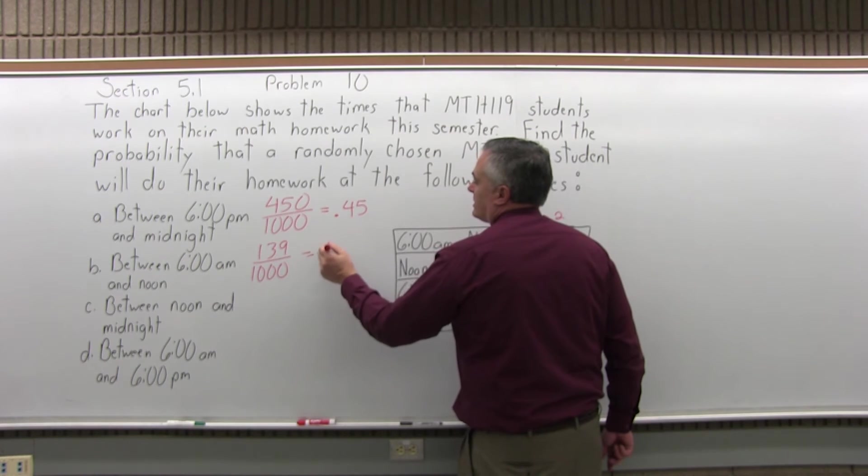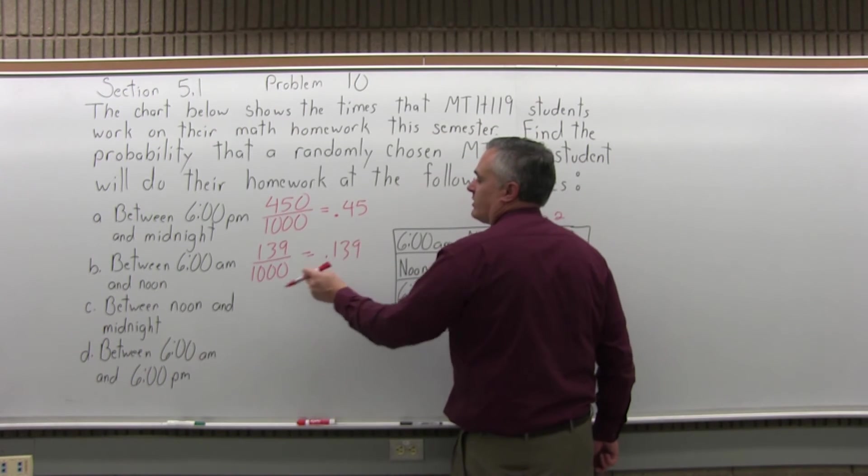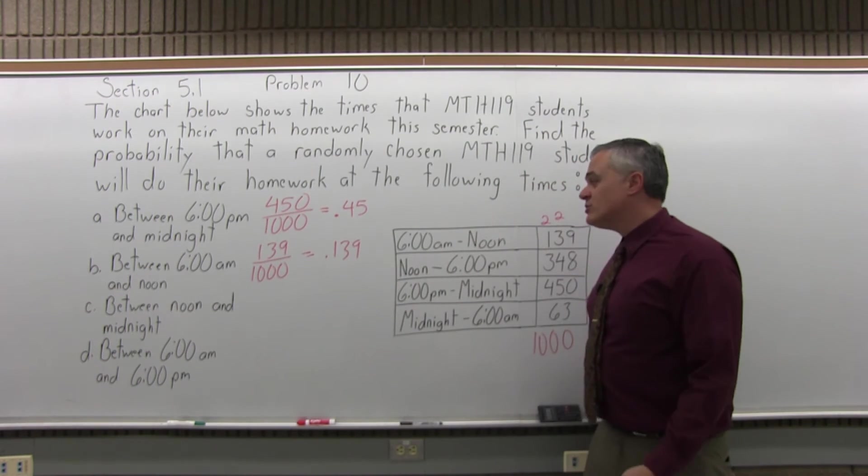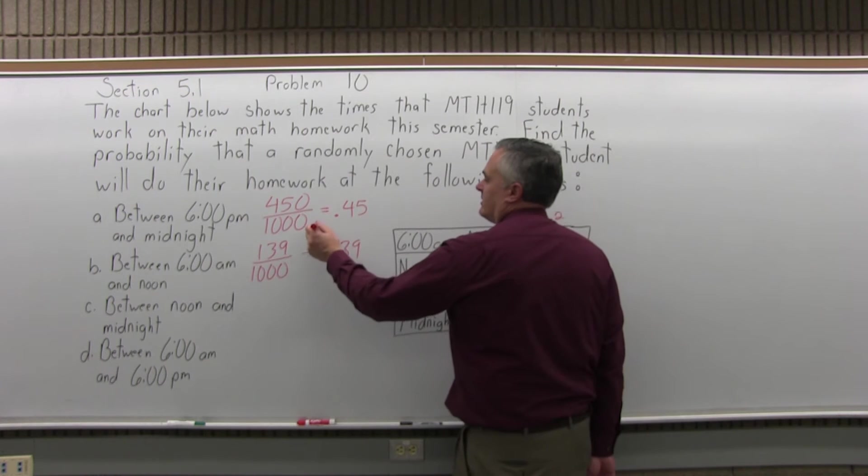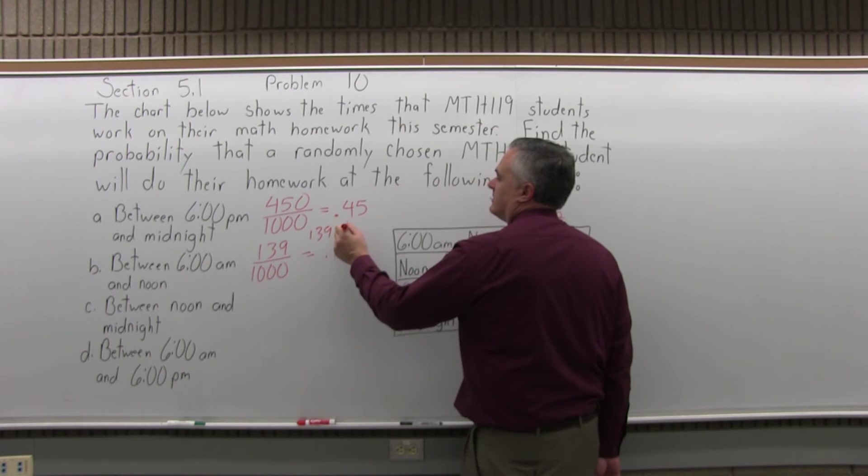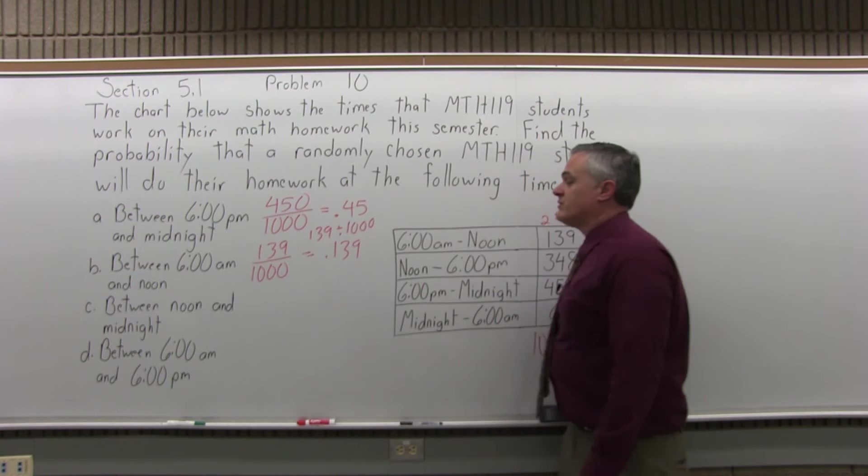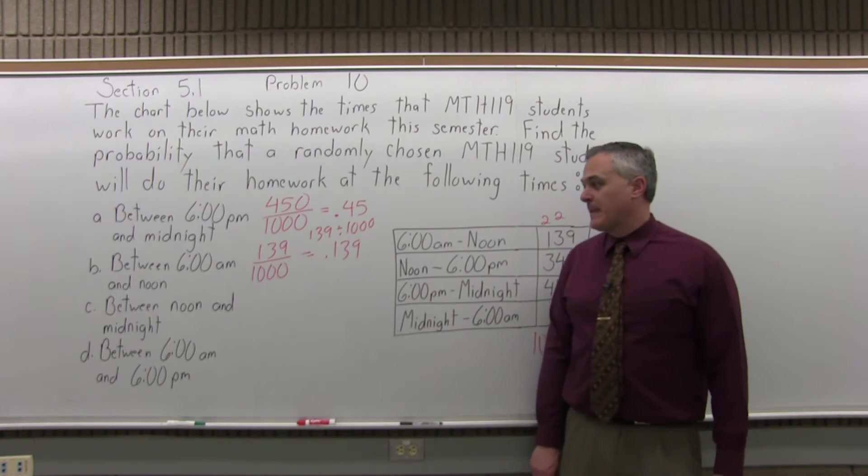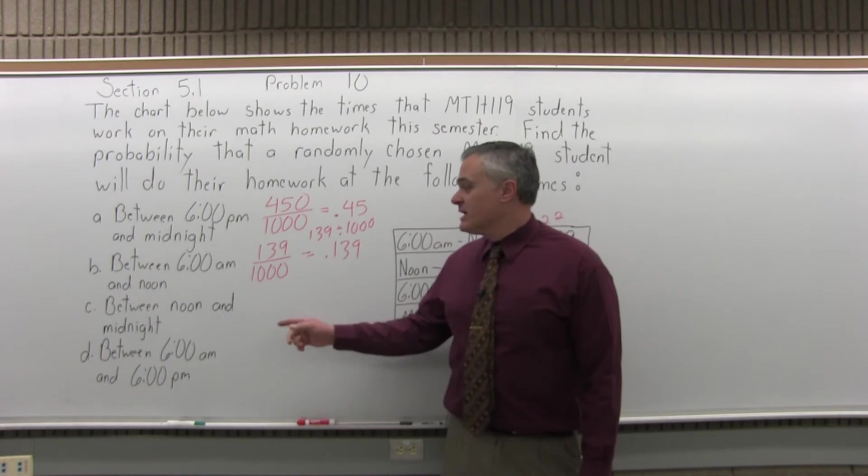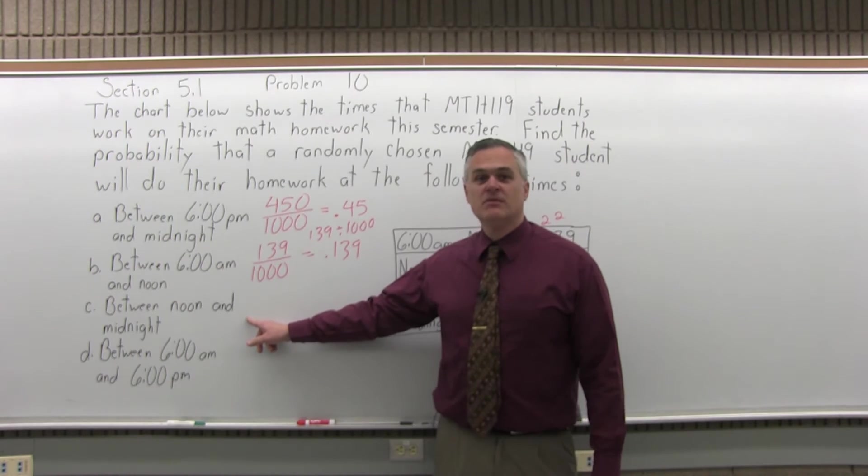And again, that converts just so easily to .139 because of the three zeros. You could do it on the calculator if you don't know that trick, but you can get .139 or almost a 14% probability. Now, the next one between noon and midnight.